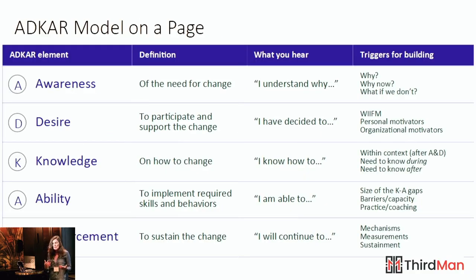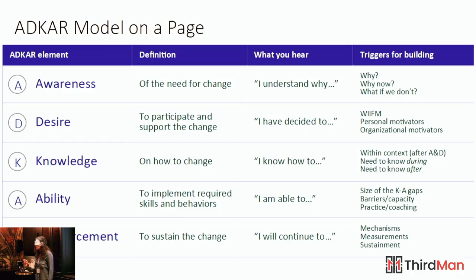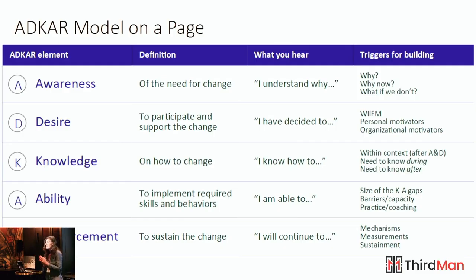His research showed that people go through about five stages in order to adopt a change — awareness, desire, knowledge, ability, and reinforcement. People have to be aware that a change is coming. Research shows that it takes seven times — you must communicate something seven times in order for people to understand what's coming. That's how long it takes to connect.